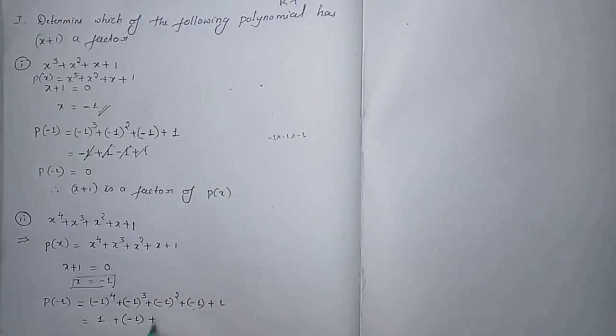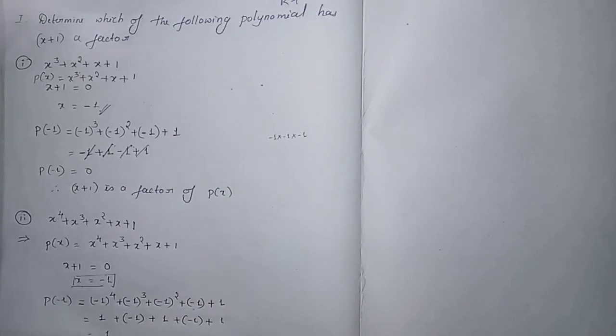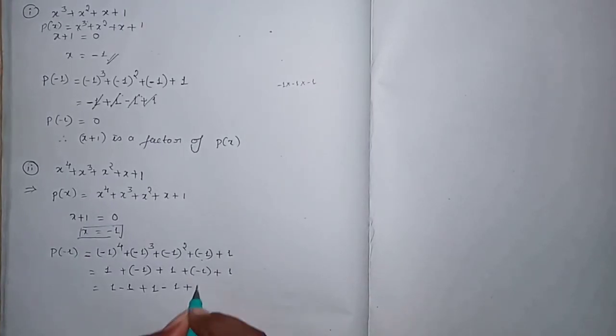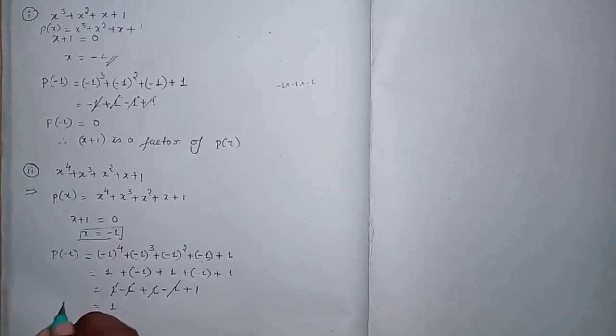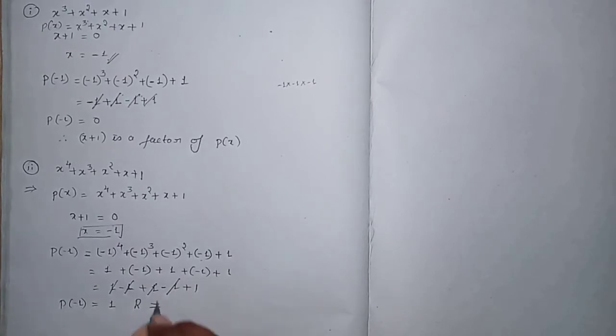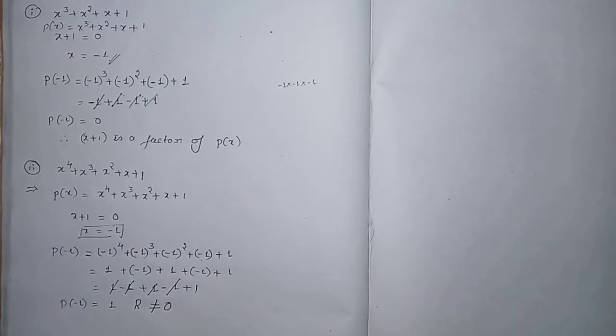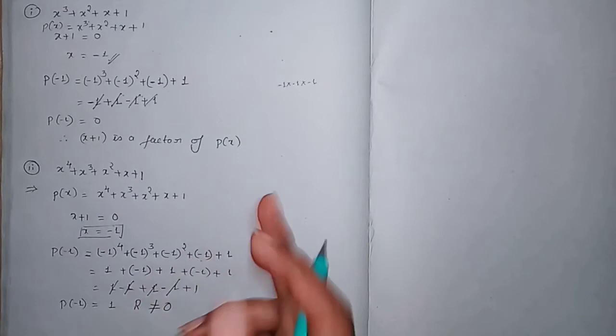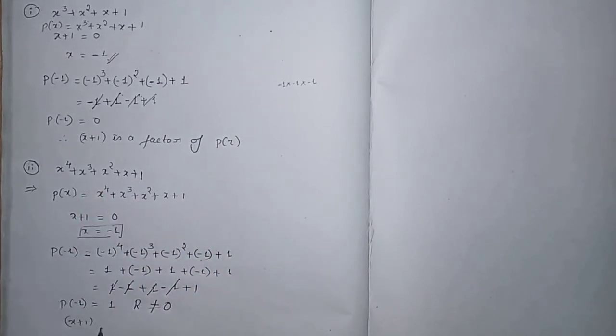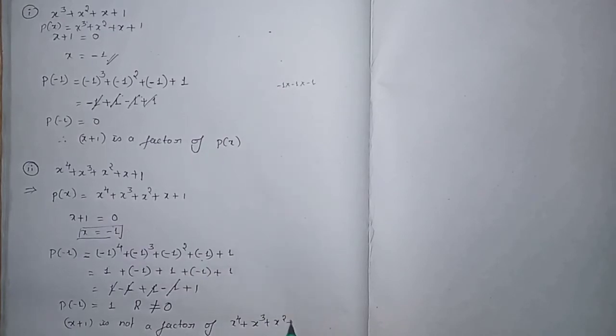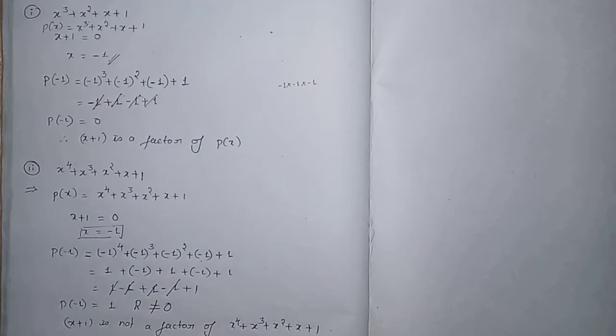So p(-1) = 1 - 1 + 1 - 1 + 1 = 1. The +1 and -1 pairs cancel, leaving 1. Since p(-1) = 1 ≠ 0, the remainder is not zero. Therefore, (x+1) is not a factor of x⁴ + x³ + x² + x + 1.